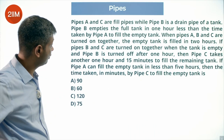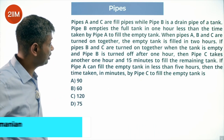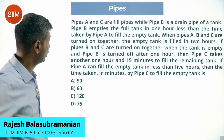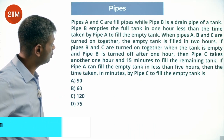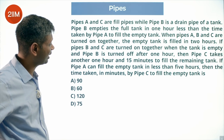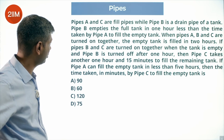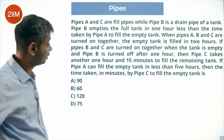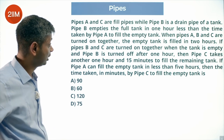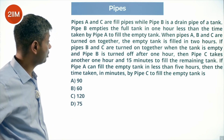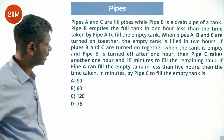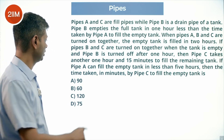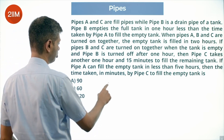Pipe A and C are fill pipes while pipe B is a drain pipe of a tank. Pipe B empties the full tank in one hour less than the time taken by pipe A to fill the empty tank. When pipes A, B, and C are turned on together, the empty tank is filled in two hours.